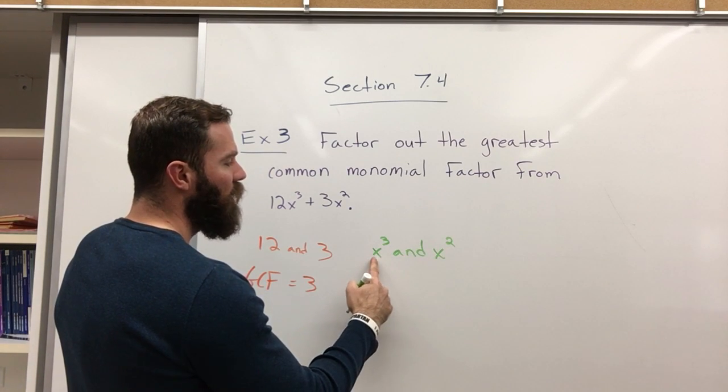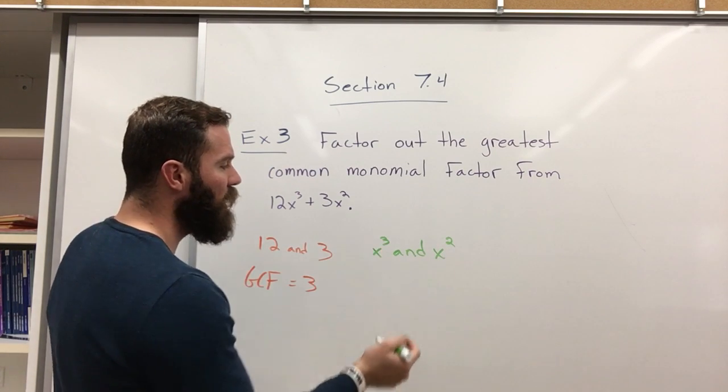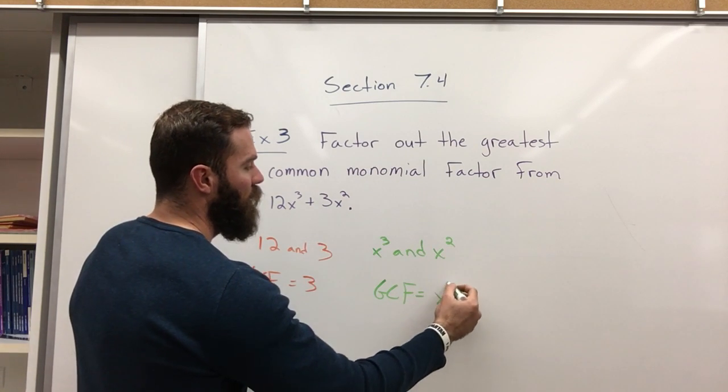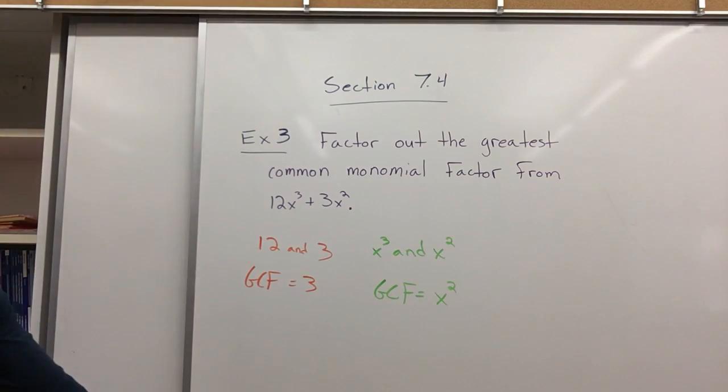And x squared goes into x three. The greatest common factor is x squared.